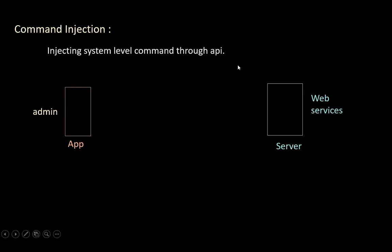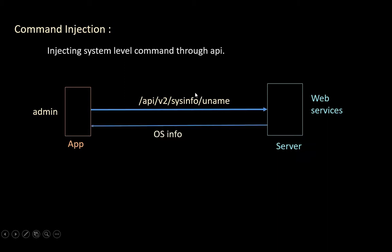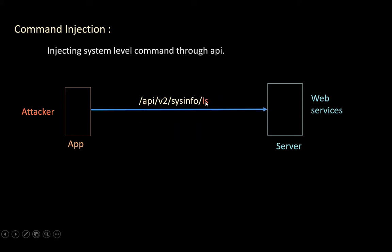Command Injection: in this attack, the attacker injects a system-level command through the API. Let's say the application is used by an admin who wants to get OS information of the target server, so they send an API request to the sysinfo endpoint. This endpoint uses the Linux command `uname` to execute on the server and get OS information. If an attacker uses it, they can inject their own OS command — like `ls` to get a list of all files in the current directory.